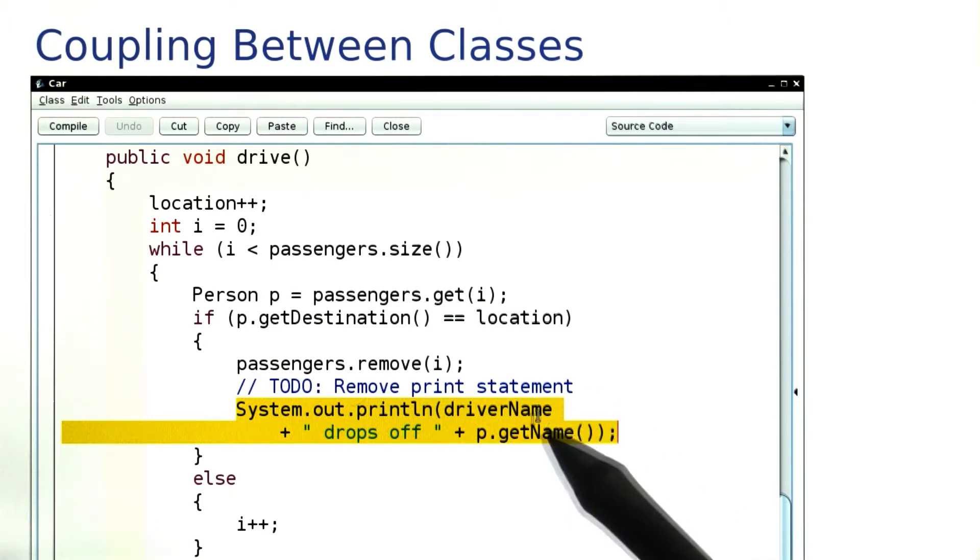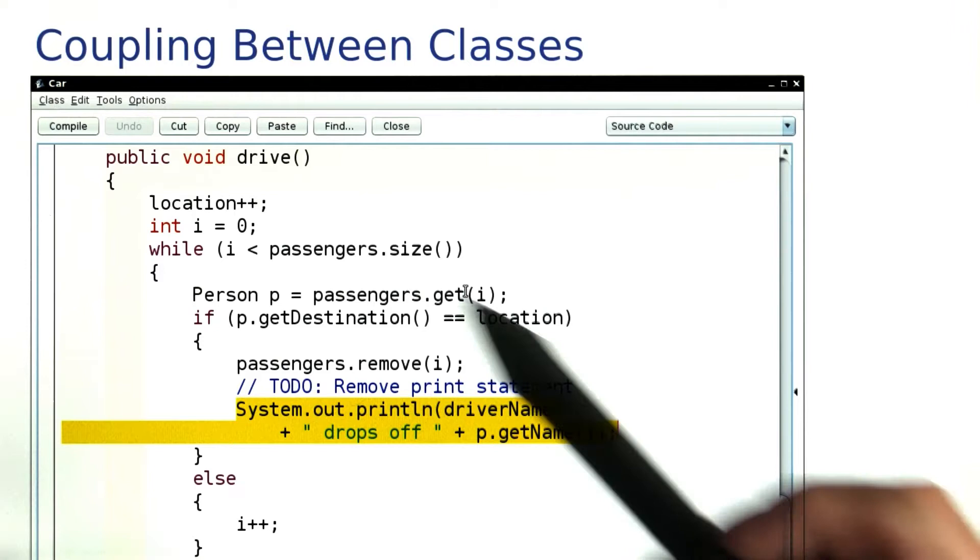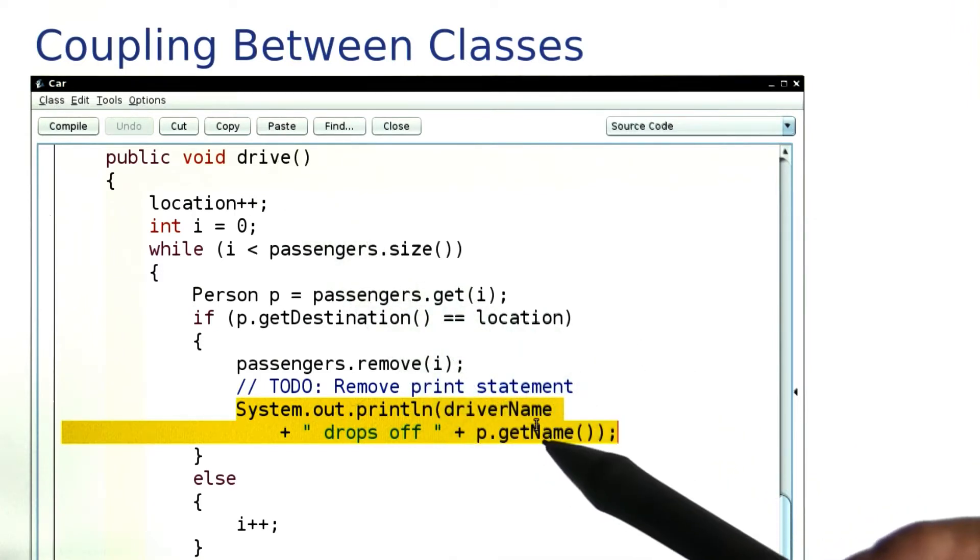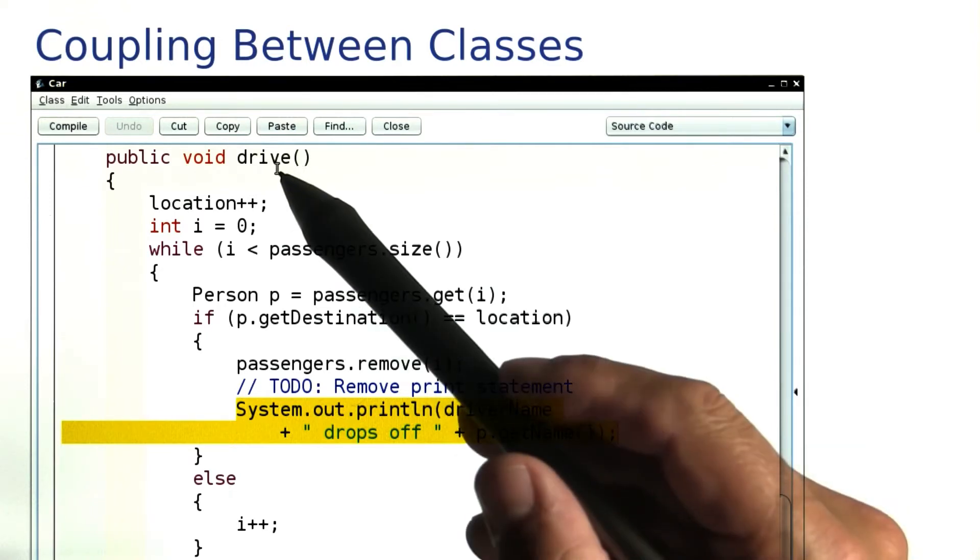So we want to move this again to the simulation class that calls the drive method. There's just one problem, and that is that this statement occurs in a loop. There may be more than one printout per call to drive.